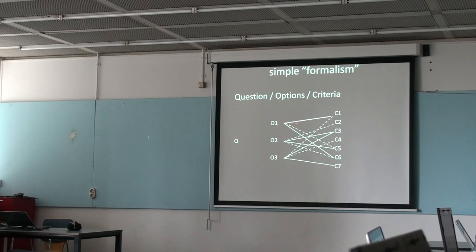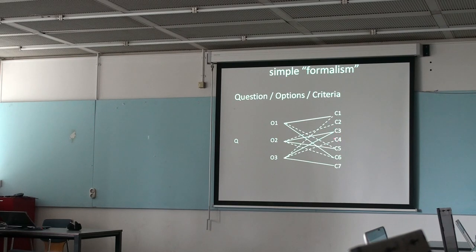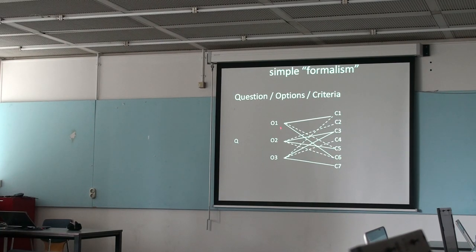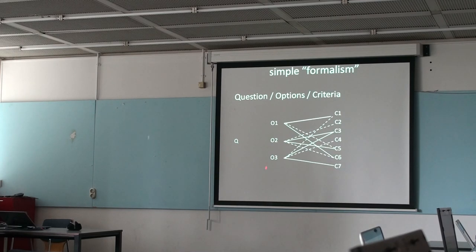I draw a solid line meaning this option is fine for criteria C1. For C2, C3, C4 — doesn't matter. Option 1 for C5 is not good, and I got a dotted line here. For criteria 6, option 1 is again good. And this way I can describe for all options how they relate to the criteria. And this is as far as the formalism goes for me.